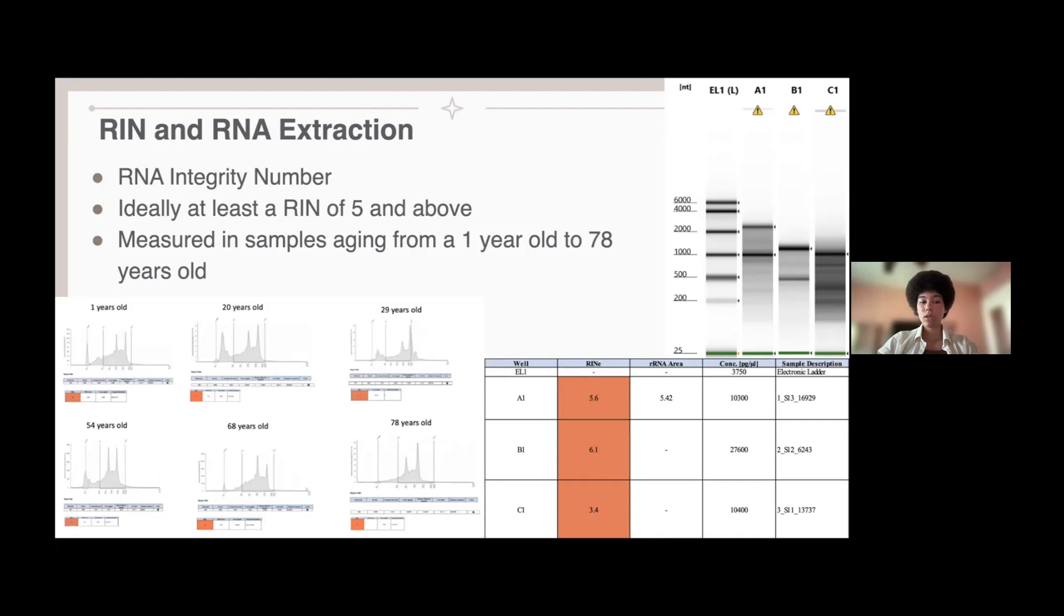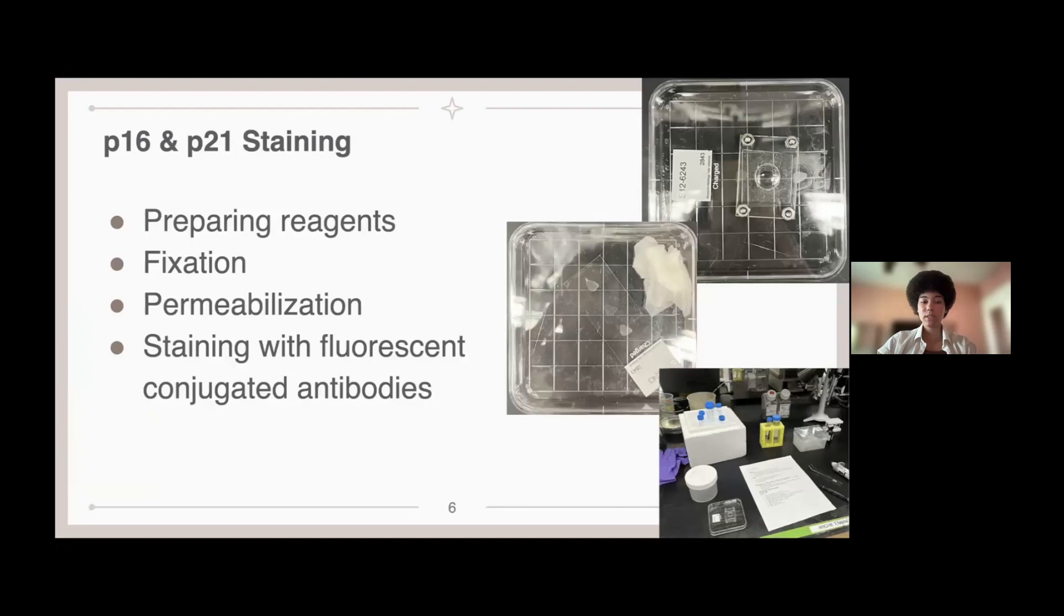So some of the RIN numbers are depicted in these images. The lowest RIN number we had was the one-year-old with a 5.2, and some of the higher numbers were a 6.3 for the 29-year-old.